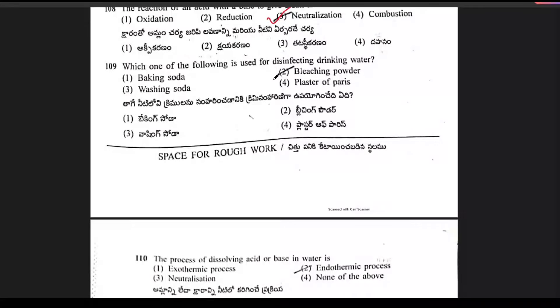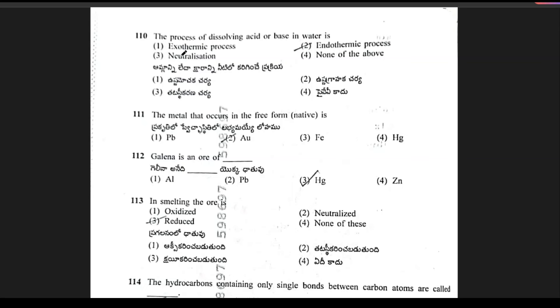Which one of the following is used for disinfecting drinking water? Options are baking soda, bleaching powder, washing soda, plaster of Paris. This is none other than bleaching powder. Next question: the process of dissolving acid or base in water is called exothermic.